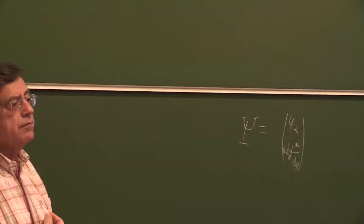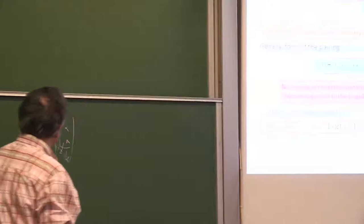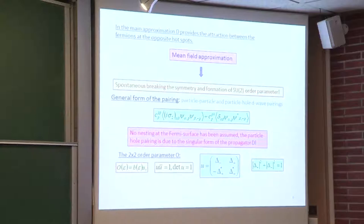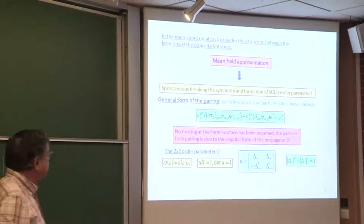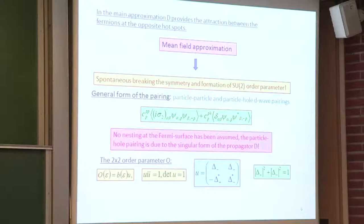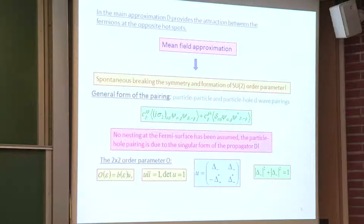We have this rotation, and therefore when we do the mean field approximation one can expect different pairings. In terms of the small psi: this pairing corresponds to superconductivity and this pairing corresponds to particle-hole pairing, appearing at the level of the mean field. Importantly, no nesting of the Fermi surface has been assumed; particle-hole pairing is possible due to the singular form of the propagator D, which is just the propagator of the critical field phi.